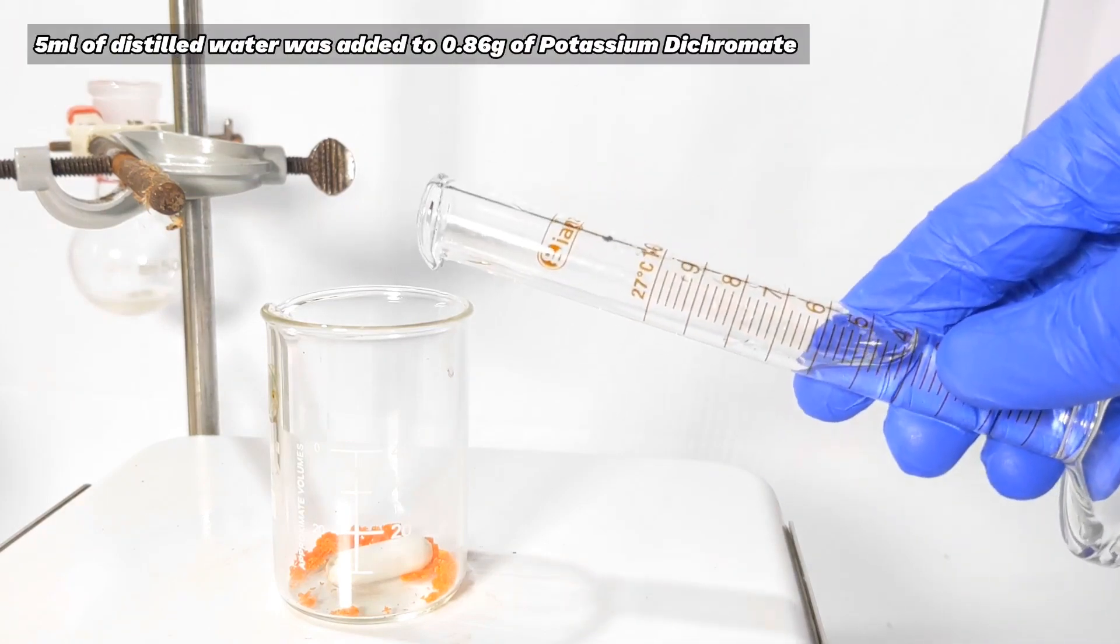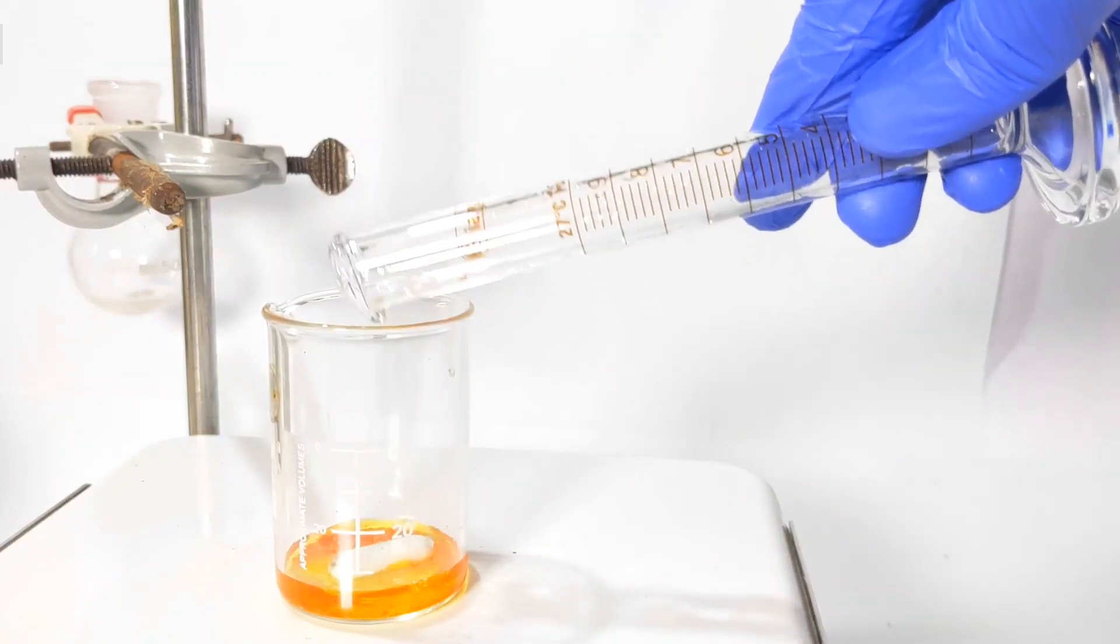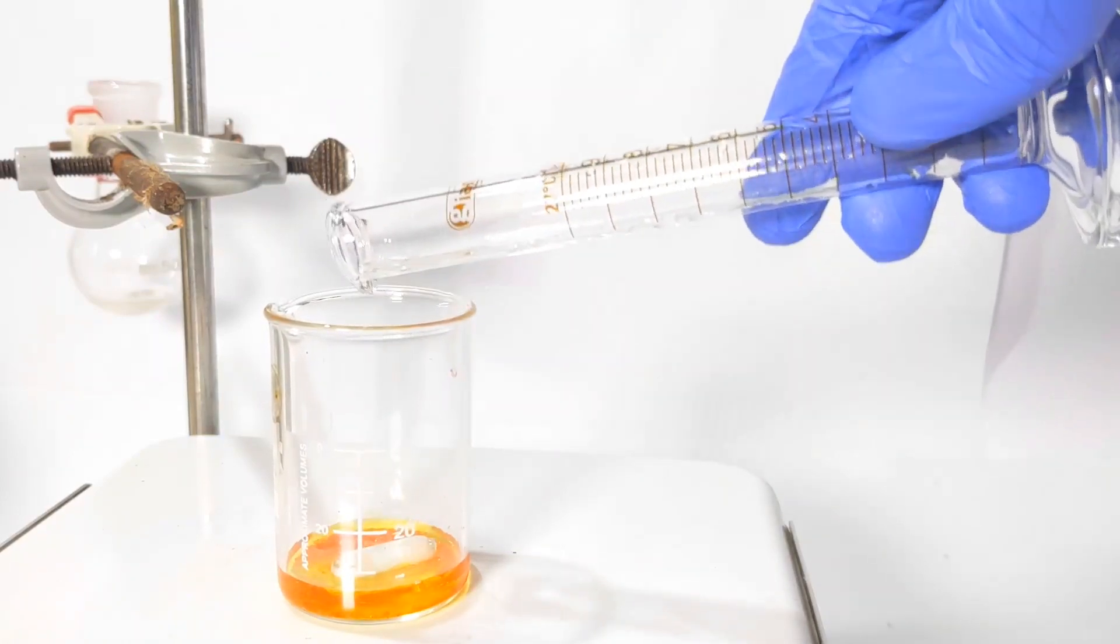Now 5 milliliters of water was added to a beaker containing 0.86 grams of potassium dichromate and a stirring bar. Stirring was turned on and the solid was dissolved in water.